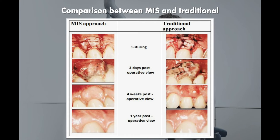In MIS wound closure, smaller sutures such as 6-0 to 8-0 monofilament polypropylene sutures are used for optimal wound closure, and smaller needles allow more precise approximation of tissue edges, resulting in faster healing. In traditional surgery, 3-0, 4-0, or 5-0 black braided silk sutures are used and healing takes more time.